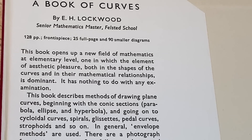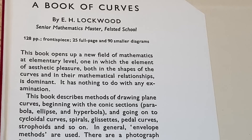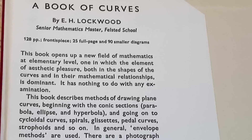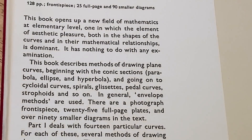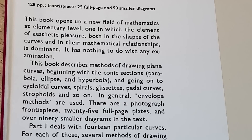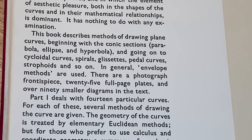This book opens up a new field of mathematics at elementary level, one in which the element of aesthetic pleasure — both in the shapes of the curves and their mathematical relationships — is dominant. It has nothing to do with any examination. This book describes methods of drawing plane curves, beginning with the conic sections: parabola, ellipse, and hyperbola, and going on to cycloidal curves, spirals, glissettes, petal curves, strophoids, and so on. In general, envelope methods are used. There are a photograph frontispiece, 25 full-page plates, and over 90 smaller diagrams in the text.